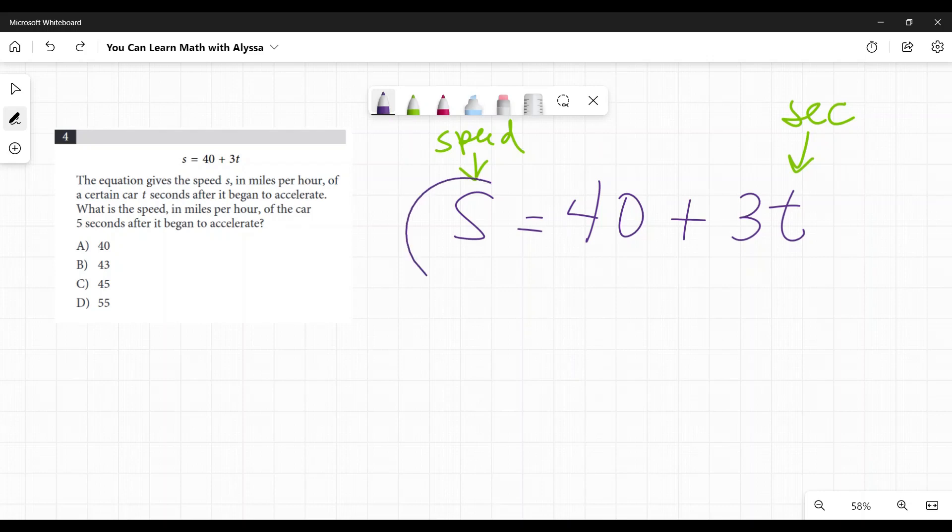So the speed, the rate of speed doesn't change. So they're wanting to know what is the speed five seconds after it began. They're not changing this from seconds to minutes, minutes to hours. They're keeping it seconds. They're being nice.